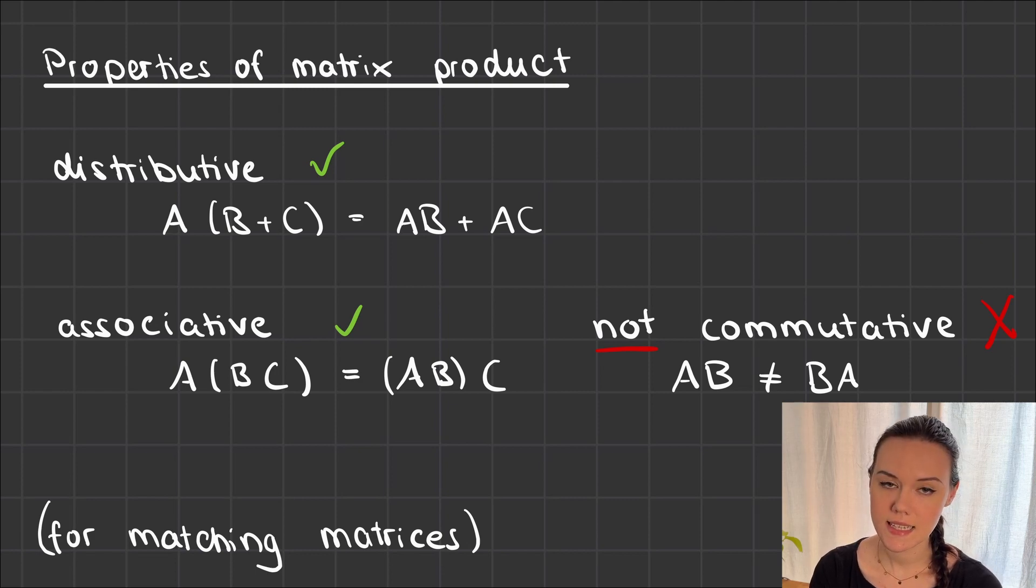Then the next thing is that it's associative. So that means if you have a product chain of A times B and then times C, it's the same if you first multiply A and B and then multiply C with the result of that, or if you first multiply B and C together and then multiply A with the result of that. Now, of course, all of that only works if the products are defined. So the matrices have to have matching dimensions, as I showed you on the first slide of this video.